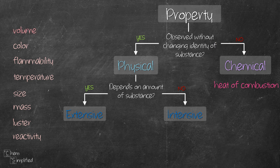Next is volume. We can observe it without changing its chemical identity, so that makes it a physical property. If we have a lot of that substance, we say it has high volume, and if we have very little of it, the volume is low. That means volume is dependent on the amount of substance, making it an extensive property.